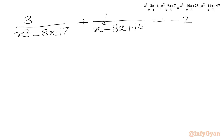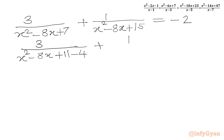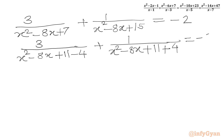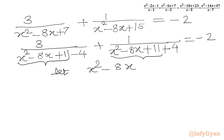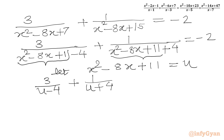Now we consider a substitution. We rewrite the denominators as (x squared minus 8x plus 11) minus 4 and (x squared minus 8x plus 11) plus 4. Let u equal x squared minus 8x plus 11. So the equation becomes: 3 over (u minus 4) plus 1 over (u plus 4) equals negative 2.